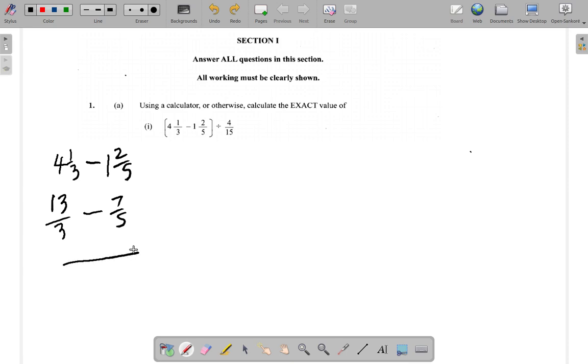Then if we find the LCM of 3 and 5 we get 15. 3 into 15 goes 5 times, 5 multiplied by 13 is 65, so we have 65 here. Minus 5 into 15 is 3 times, 3 times 7 is 21, so we subtract that part at the top. We have 65 minus 21, and that will give us 44, so it's 44/15 that we have.